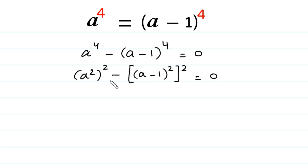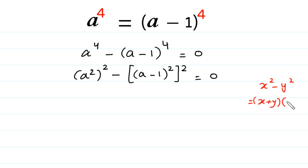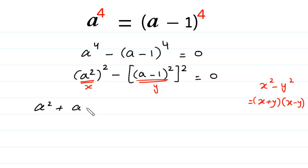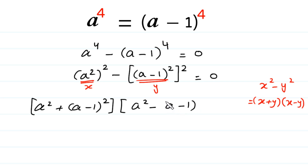Now we can see there is a minus between two squares. We apply the algebraic identity x squared minus y squared equals x plus y times x minus y. Here, A squared is x and A minus 1 whole squared is y. According to this identity, we write this as A squared plus A minus 1 whole squared, times A squared minus A minus 1 whole squared, equals 0.